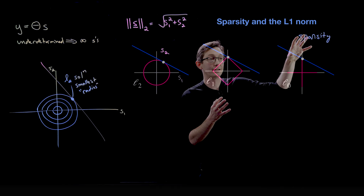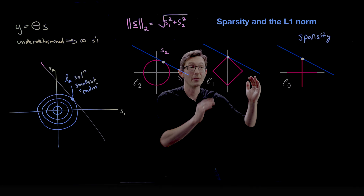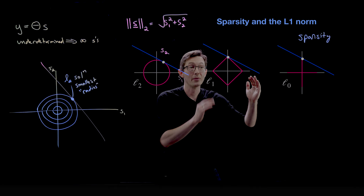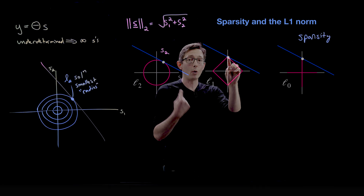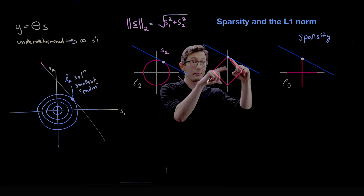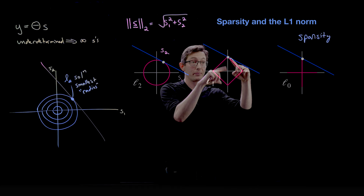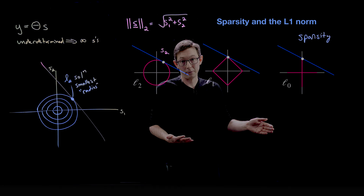So the L1 norm often gives you the same sparse solution that would have satisfied the minimum L0 norm. The L0 norm gives the ideal answer but is not computable; the L1 norm is computable and tends to give sparse solutions. To recap: this white dot is the minimum one-norm solution — I grow equal-radius diamonds until they intersect the solution family, and that point happens to be sparse.